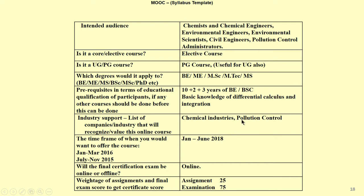ICP-AES is an analytical chemistry discipline and an instrumentation technique. It is a way of determining metal atoms in the environment — that is what we are going to emphasize. The course time frame is January to June 2018. There will be a certification if you wish to choose it and take an online multiple-choice examination.